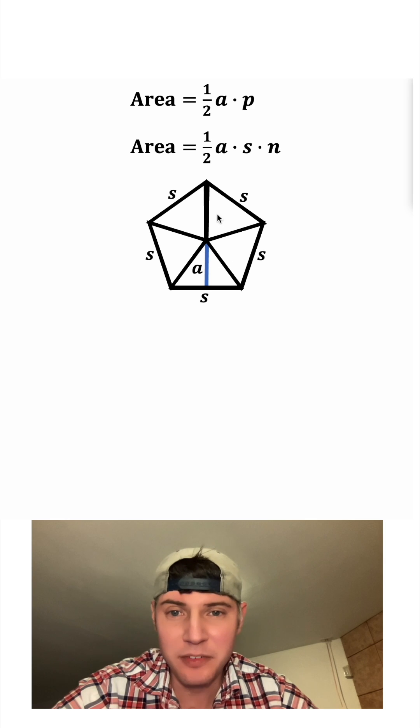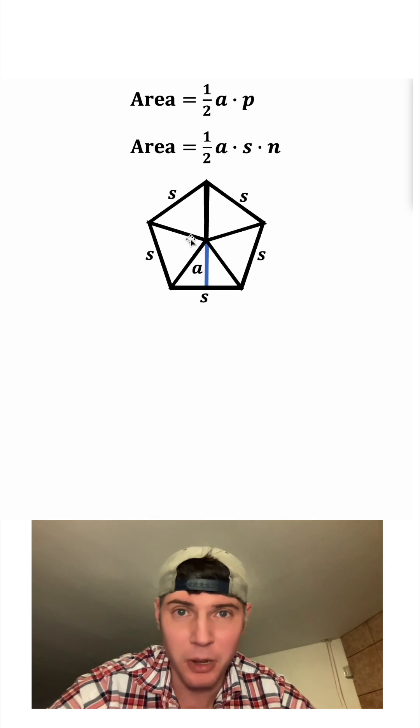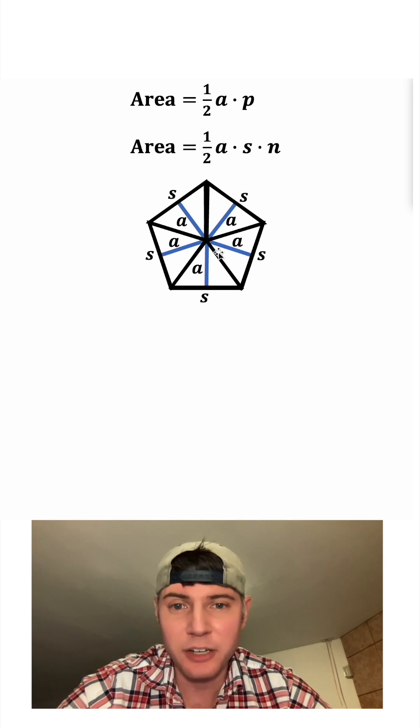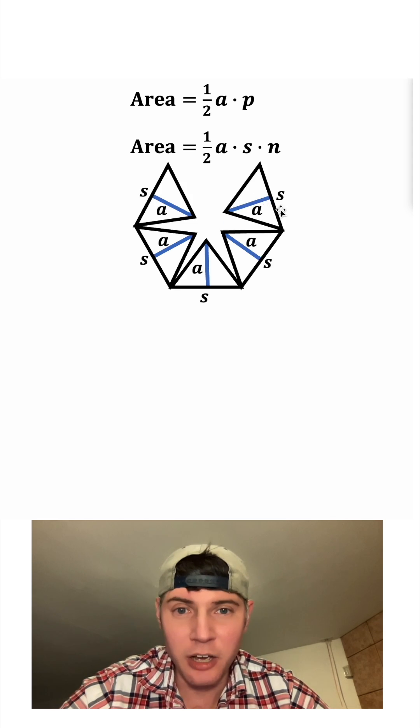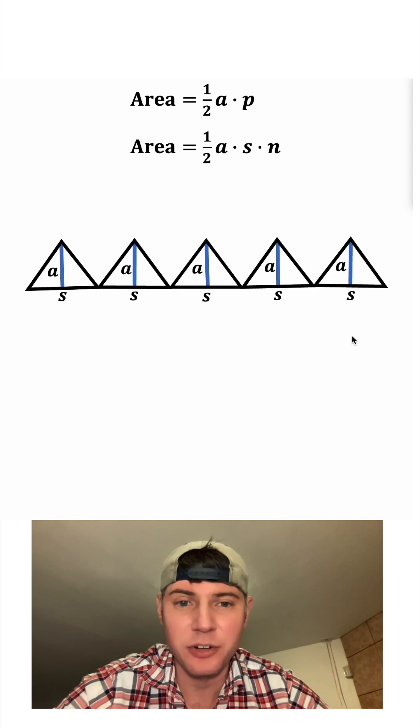And once again, it doesn't have to be five. It's just going to be however many sides your polygon has. And each of these triangles has their own corresponding apothem. And now let's do a little animation. We're going to unfold it and look at the five triangles like this.